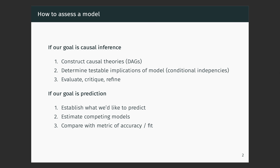When we're thinking about assessing models, we need to think carefully about what our goal is in building a statistical model. If our goal is causal inference — assessing a causal relationship between some predictor and some outcome — we really need to think carefully about causal theories, and DAGs are a great tool for doing that. Once we've established possible causal theories, we can determine testable implications, usually conditional independencies. If our goal is prediction, which is going to be the focus today, we have a very different set of tools.